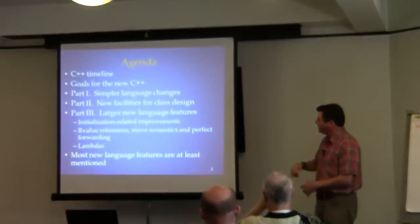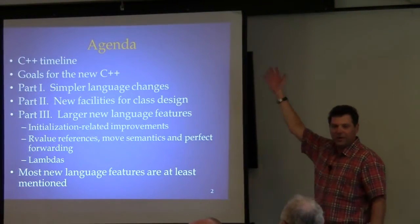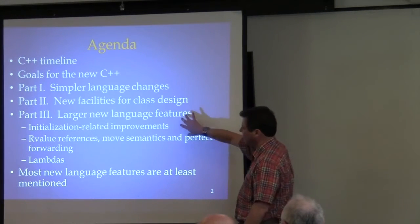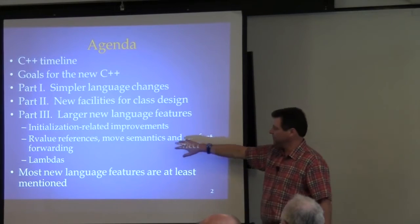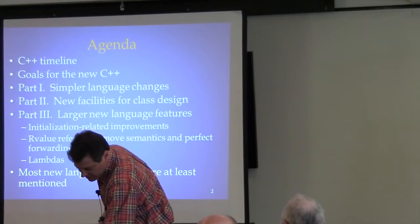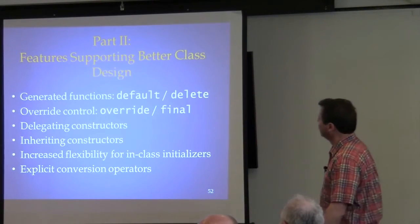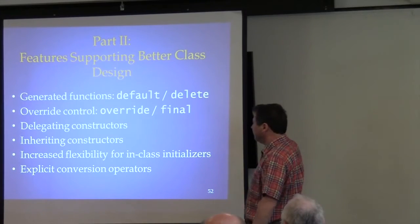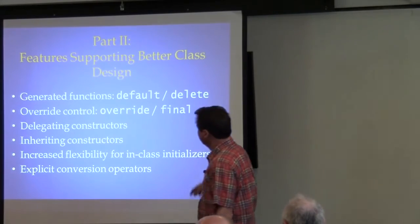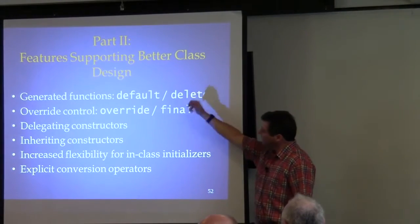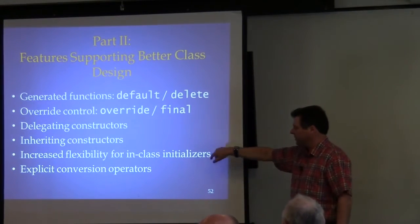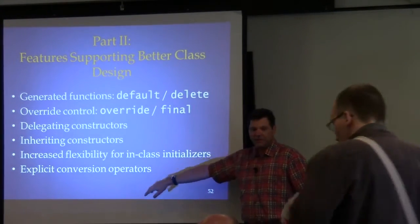For folks who were not in the morning session, we covered part one this morning. Right now we're going to cover part two and part three: facilities for class design, feature initialization, movement semantics, and lambda expressions. Part two covers features supporting better class design, including default, override, and final keywords, delegating constructors, inheriting constructors, initialization of data members in a class, and conversion operators.